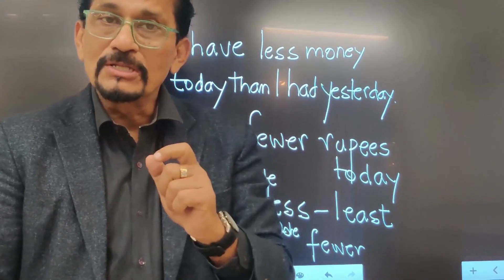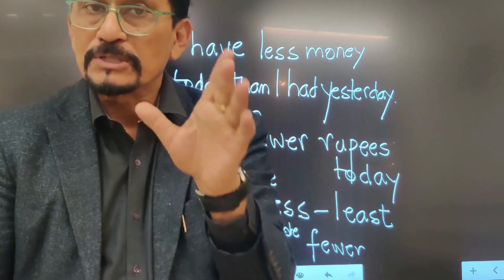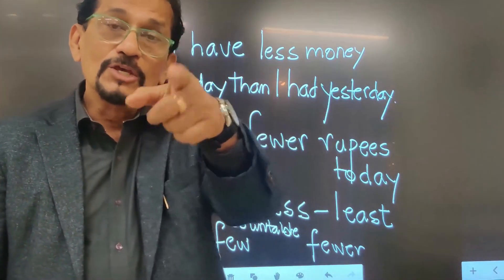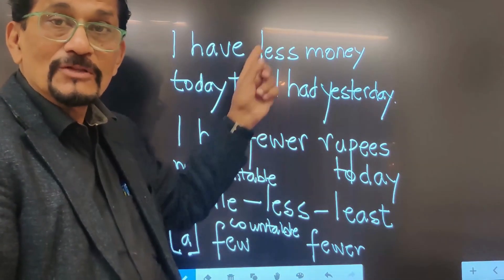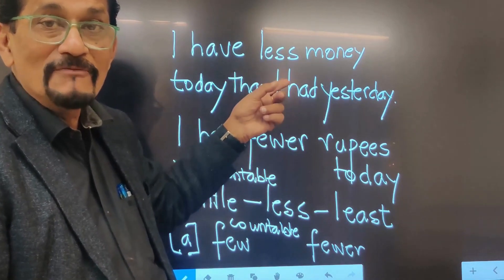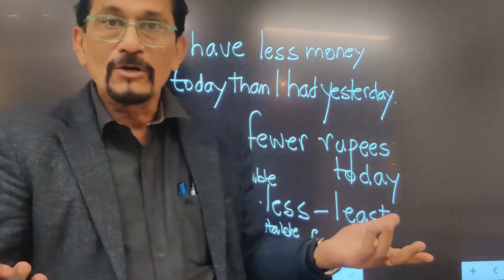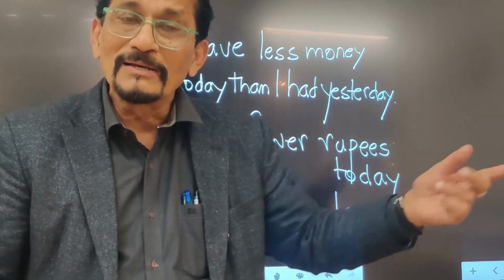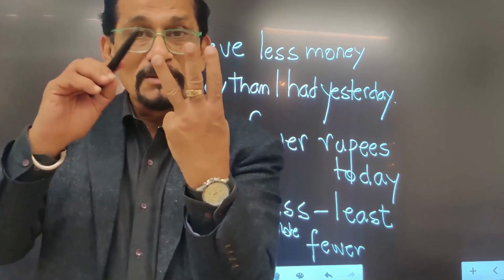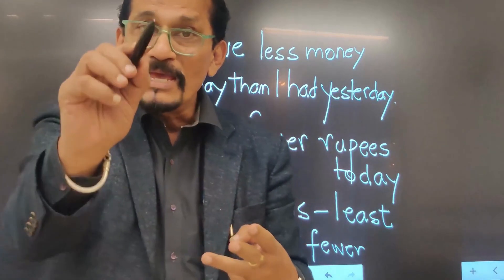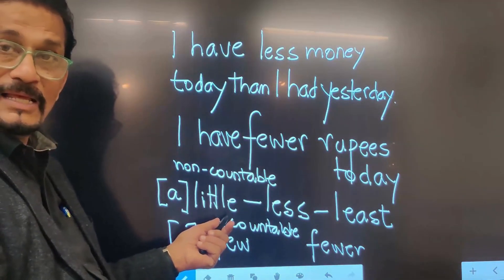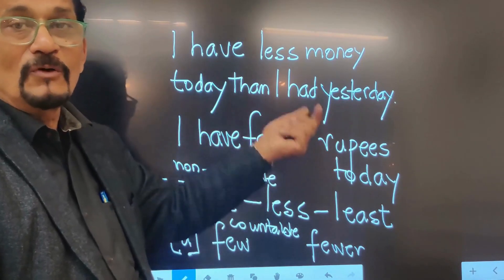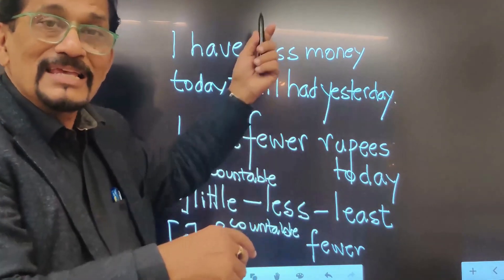Fifth question — one of the very common bloopers. Sentence: 'I have less money today than I had yesterday.' You might want to say 'lesser money' since there is a comparison with 'than.' But that is incorrect. Adjectives have three degrees: positive, comparative, superlative. The base adjective is 'little,' and its comparative form is already 'less.' So since 'less' itself is already in the comparative form, using 'lesser' is wrong. 'Less' is perfectly correct.